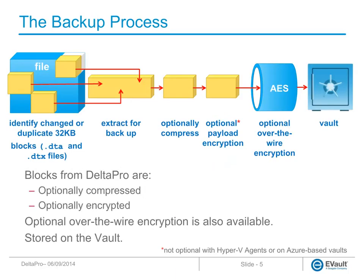The user may also choose to enable optional compression. Compressed files consume less network bandwidth and vault storage space, but compression uses more agent system resources. Different levels of compression are available in the user interface. Compression rates vary based on data type, but the average compression is 25 to 50%.